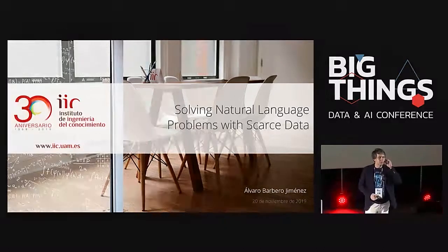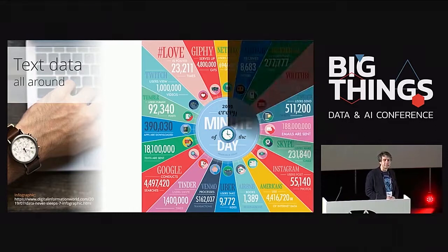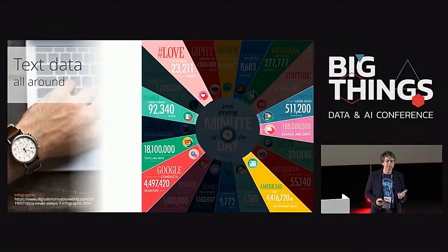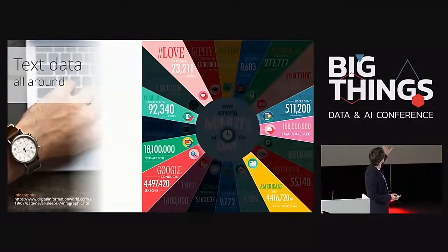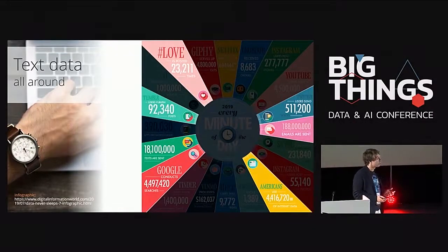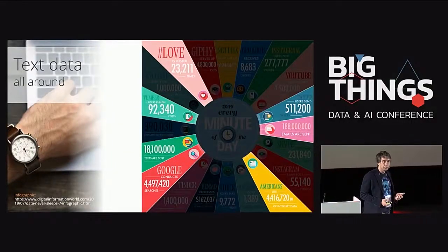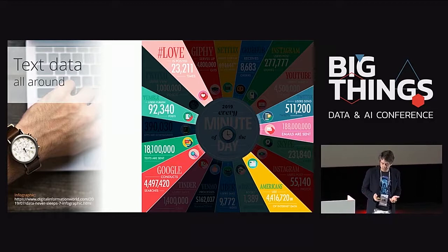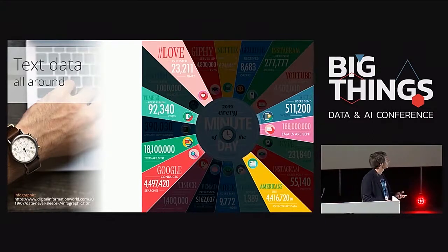Good morning everybody. Thanks for choosing these talks early in the morning. We're going to talk about text, and text is everywhere. You may already know this infographic about how much data is generated on different regions of the internet every minute. The highlighted regions are those mainly made of text — Google searches, Tumblr posts, emails. If you are unable to process text in your data analysis pipeline, you are missing out a lot of information.